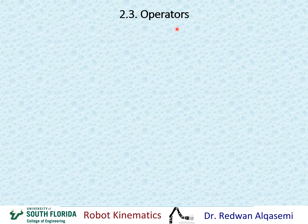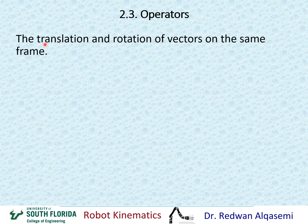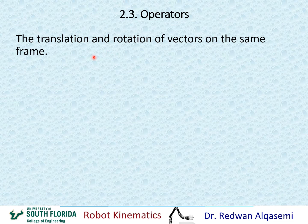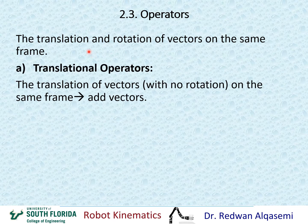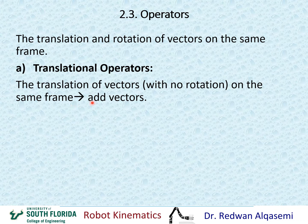The third topic in this chapter is operators. Similar to what we did with descriptions and mappings, operators use the same methodology with a different application. The definition of operators is the translation and rotation of vectors on the same frame — we have only one frame. We'll cover translational operators, then rotational operators, and then the general case with both translation and rotation.